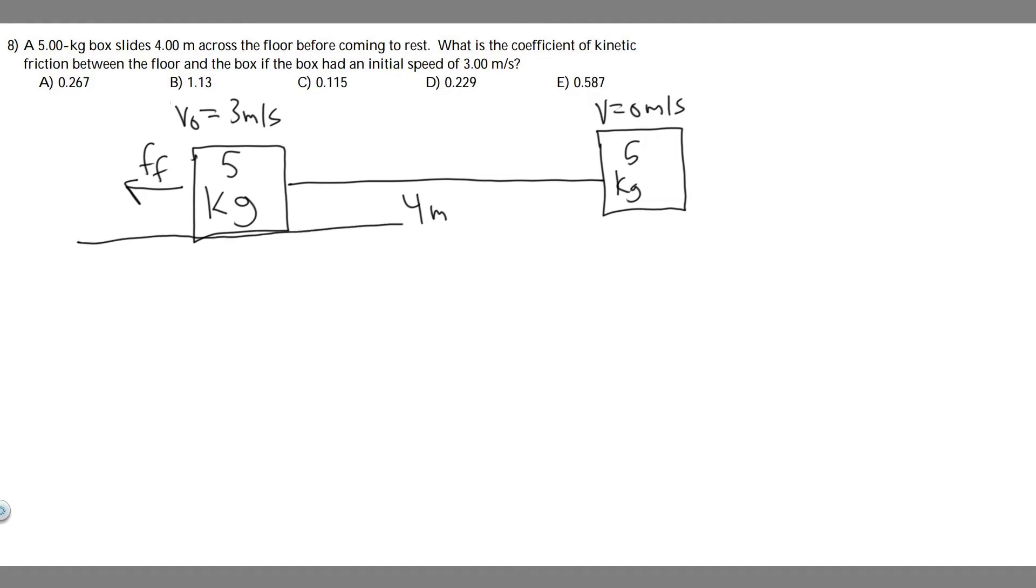The first thing you always want to do when doing these problems is draw what's going on. In this problem, we have a 5 kg box with an initial speed of 3 meters per second. We know it's going to travel 4 meters before coming to rest.